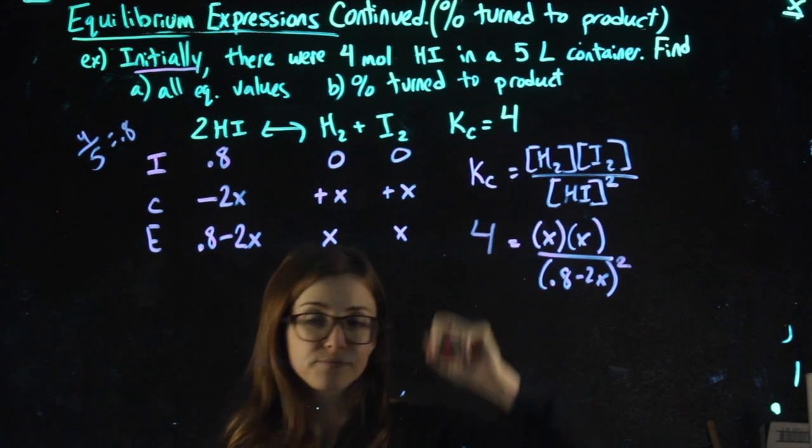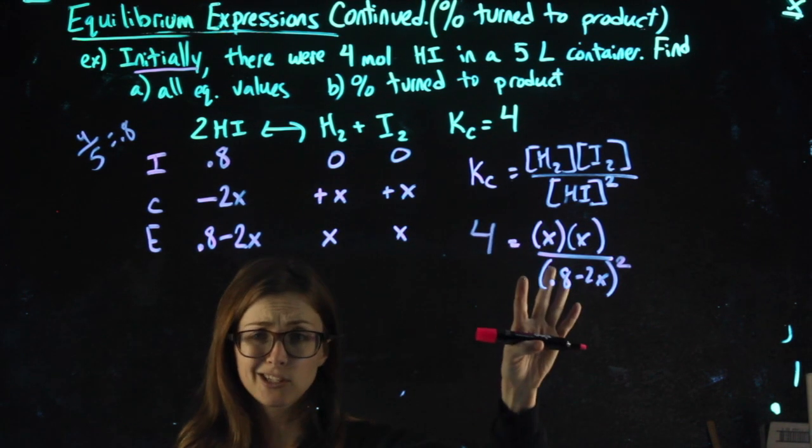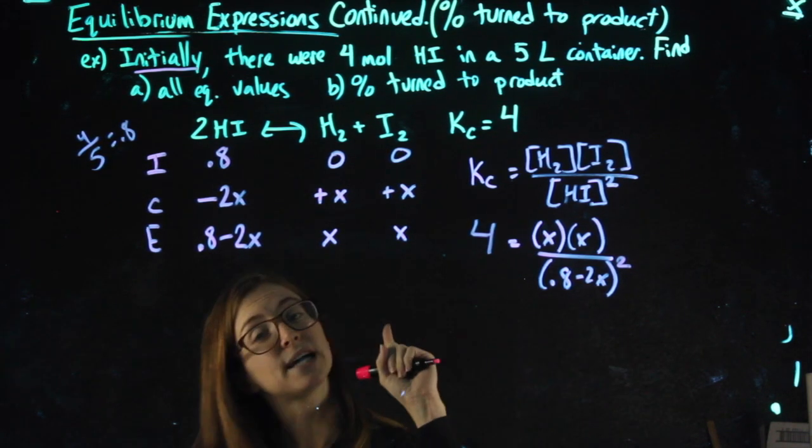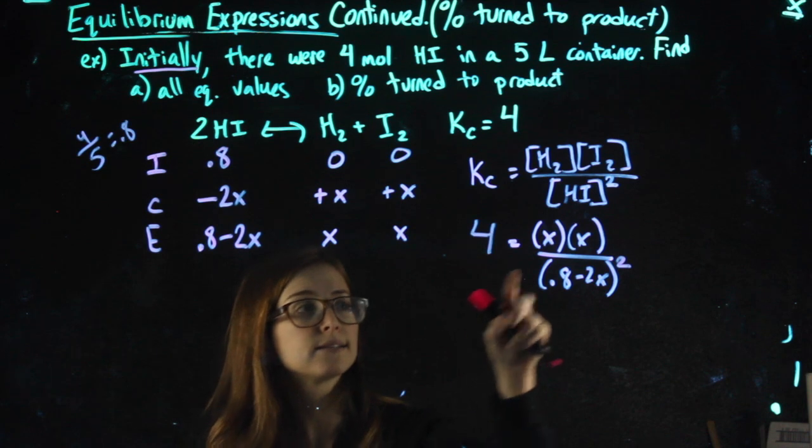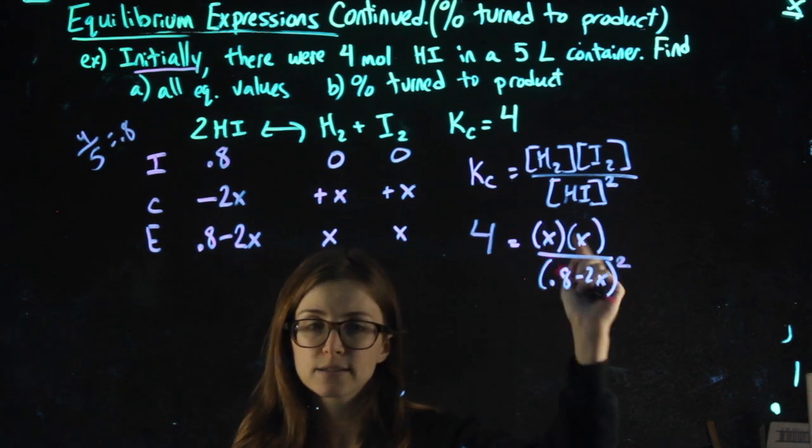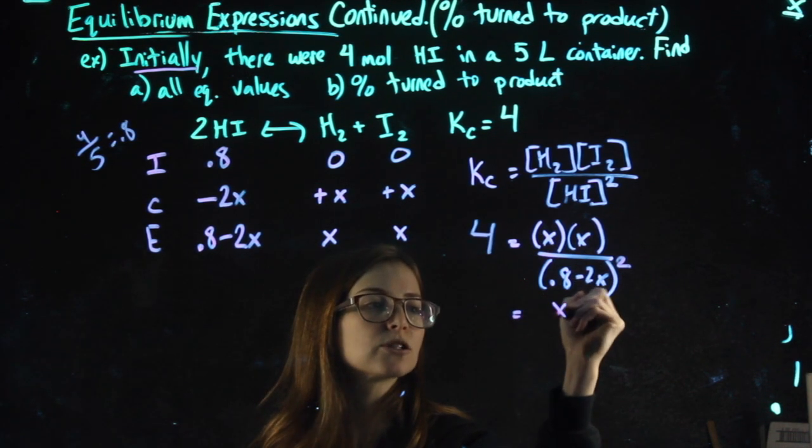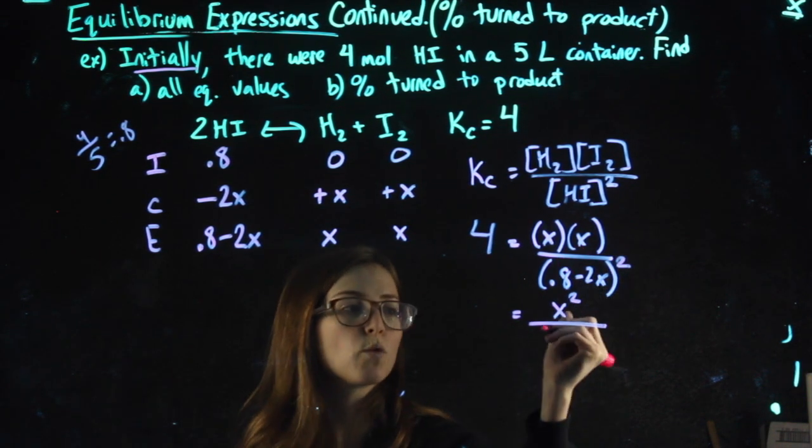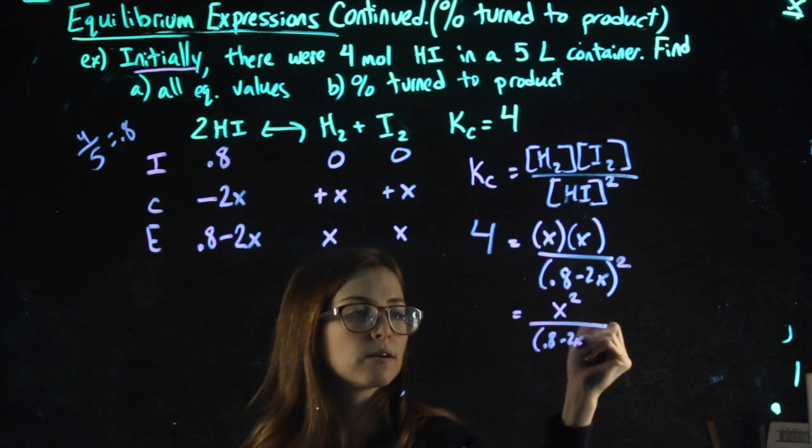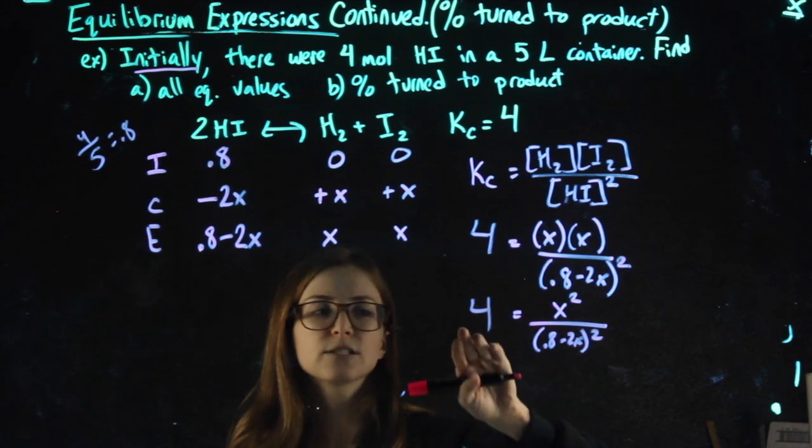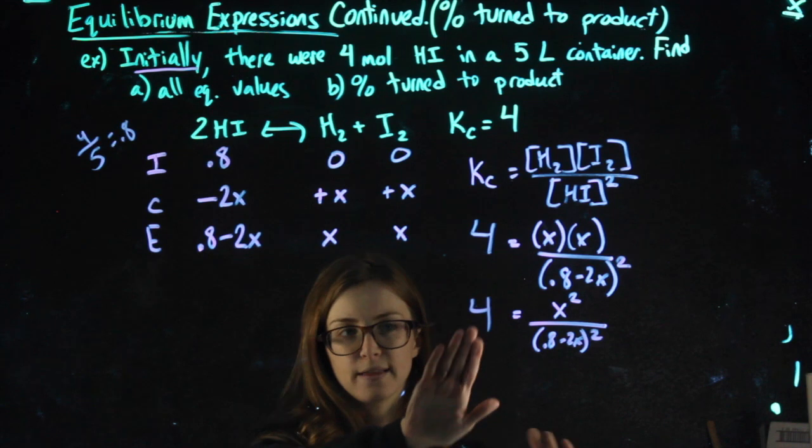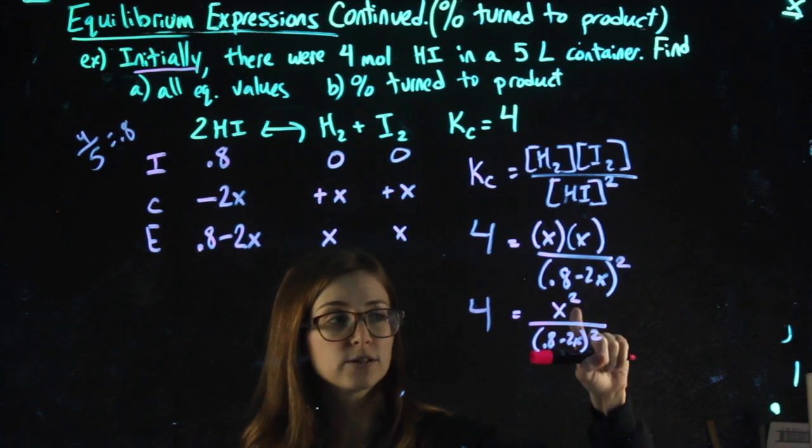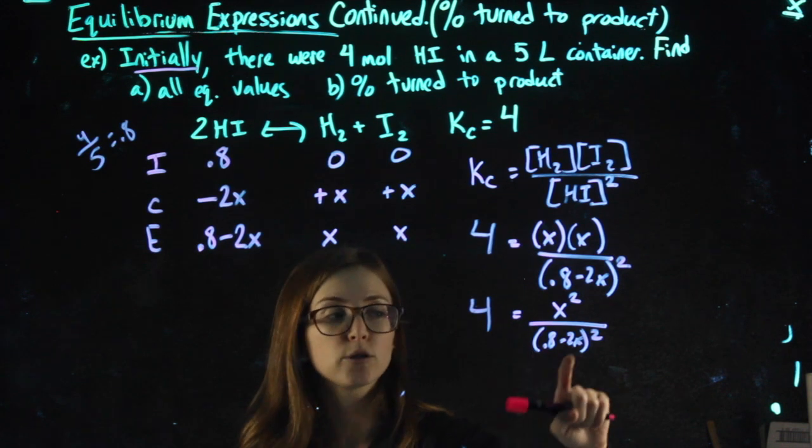I also know that Kc equals 4. Now this looks ugly and messy, and there are times when we have to solve it in an ugly, messy way, but there are times you don't have to. If you realize X times X is the same thing as saying X squared, and we already on the bottom have (0.8 minus 2X) squared, it doesn't really matter what they're equal to because this is a number I can do anything in a calculator with.